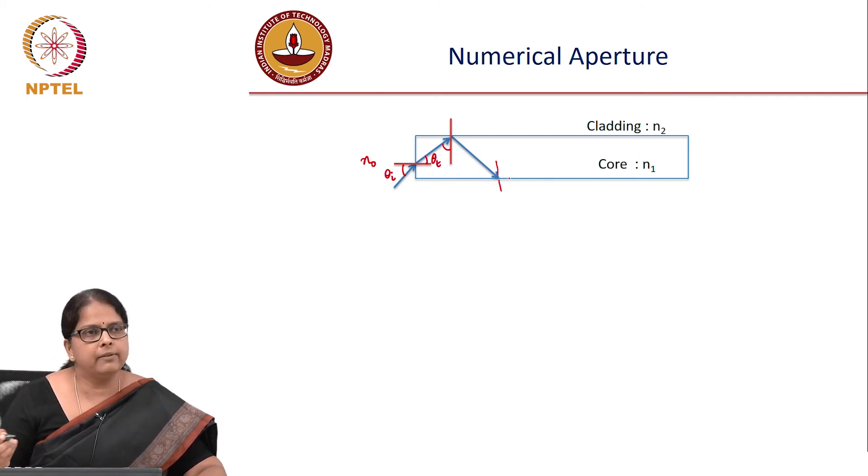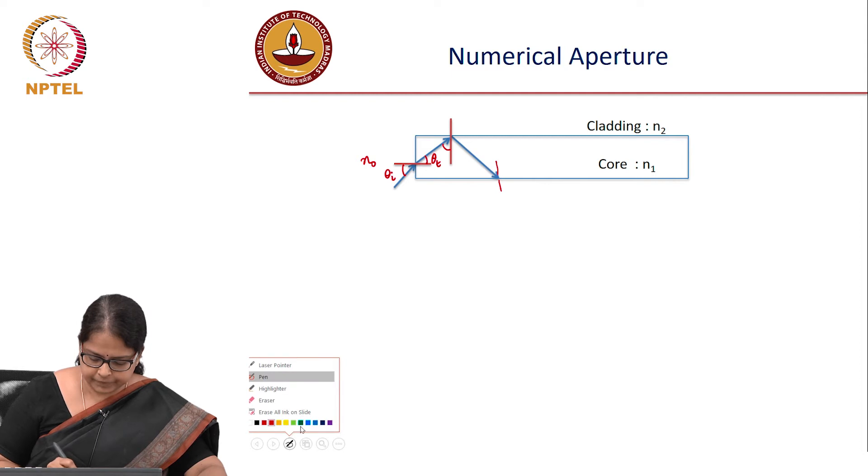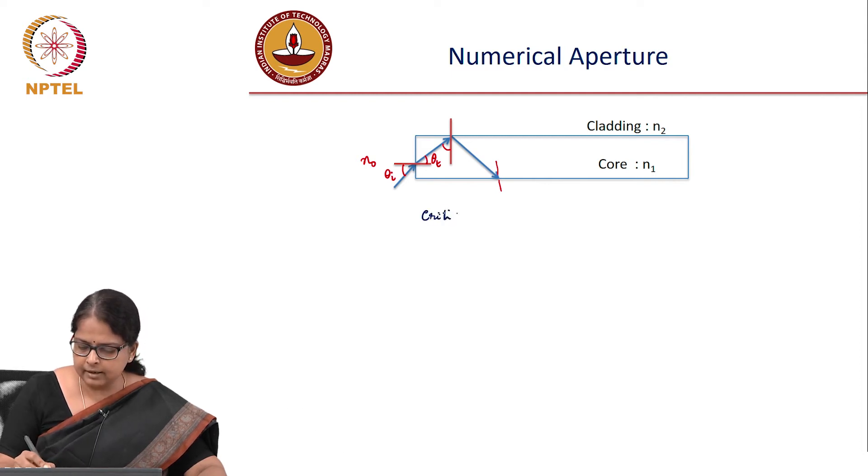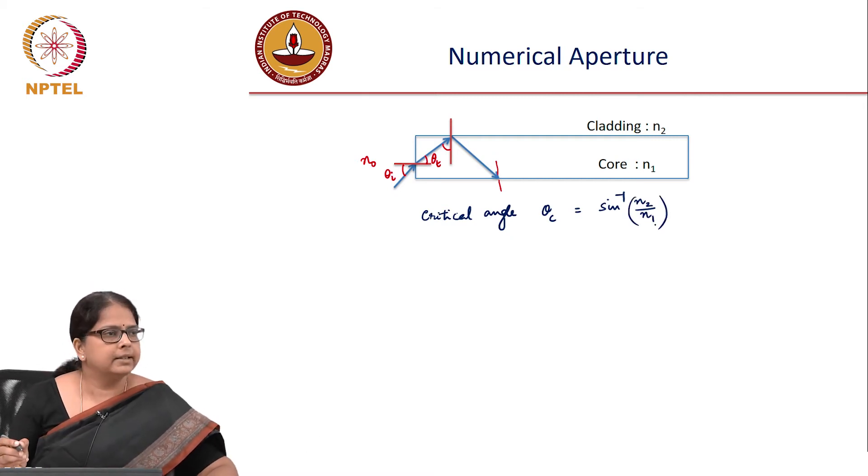You have learned how to calculate the minimum angle of incidence for guidance. What is the critical angle at the core-cladding interface? Critical angle θc is sin⁻¹(n₂/n₁). This comes from basic Snell's law.